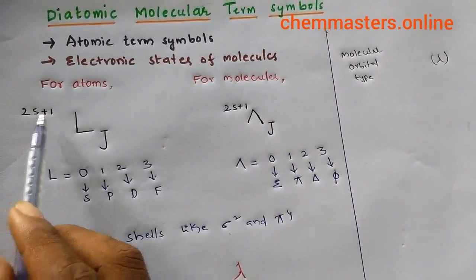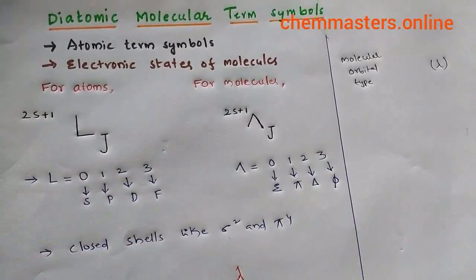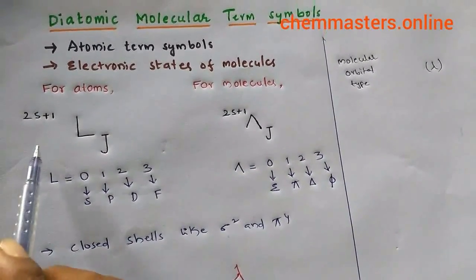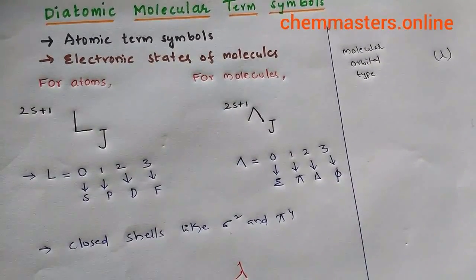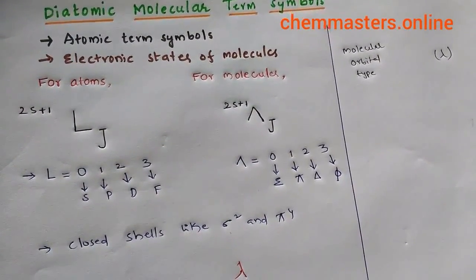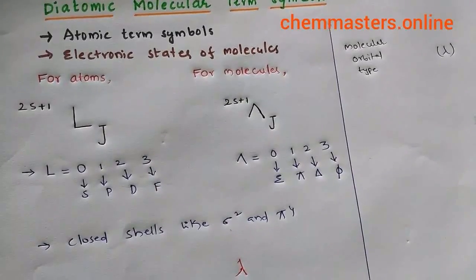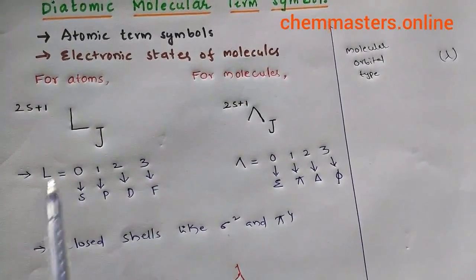2S+1 is simply called as multiplicity, and J is total angular momentum plus spin angular momentum. For atoms, L equals 0, 1, 2, 3.